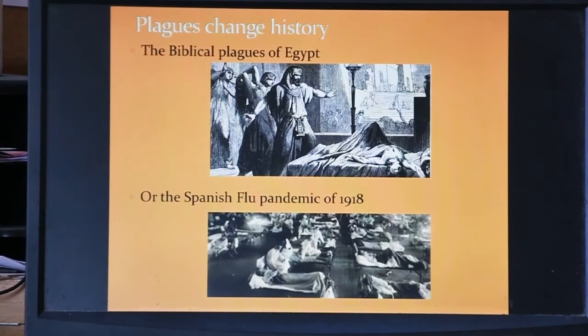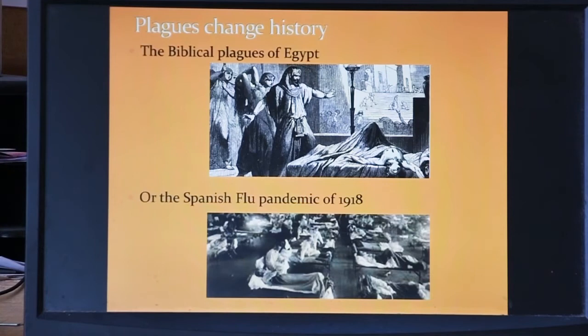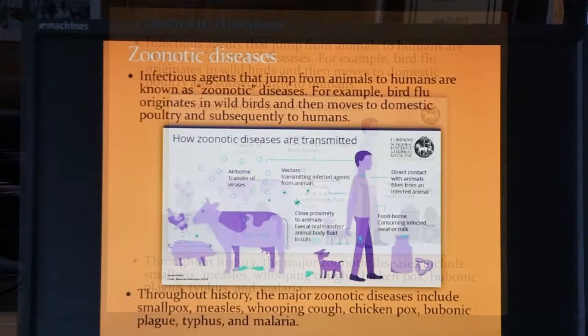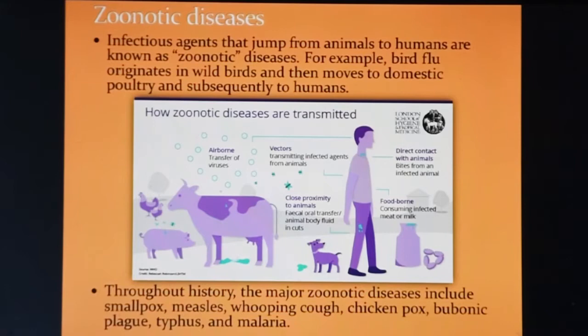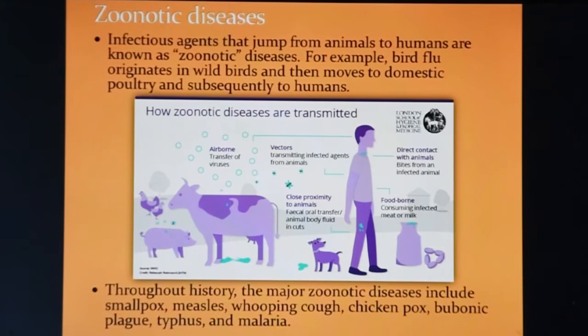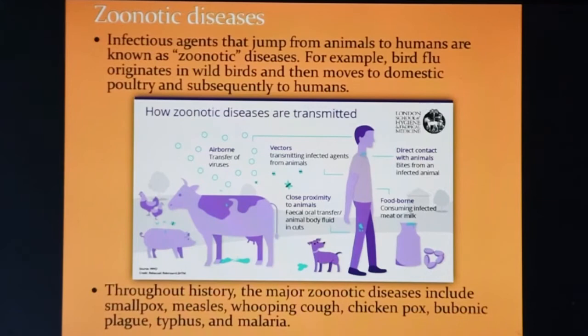It's well known that plagues have played a crucial role throughout history. Whether it's the biblical plagues of Egypt or the Spanish flu pandemic of 1918, these events have altered the course of human history. It's also well known that the origin of these diseases begins with the transmission of pathogens from animals to humans. The infectious agents that jump from animals to humans are known as zoonotic disease. For example, bird flu originates in wild birds and then moves to domestic poultry and subsequently to humans. This chart illustrates how zoonotic disease moves from common farm animals to humans.